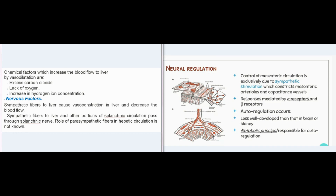Chemical factors which increase blood flow to the liver by vasodilatation include excess carbon dioxide, lack of oxygen, and increase in hydrogen ion concentration. Sympathetic nerve fibers to the liver cause vasoconstriction and decrease blood flow. Sympathetic fibers to the liver and other portions of splanchnic circulation pass through the splenic nerve. The role of parasympathetic fibers in hepatic circulation is not known.